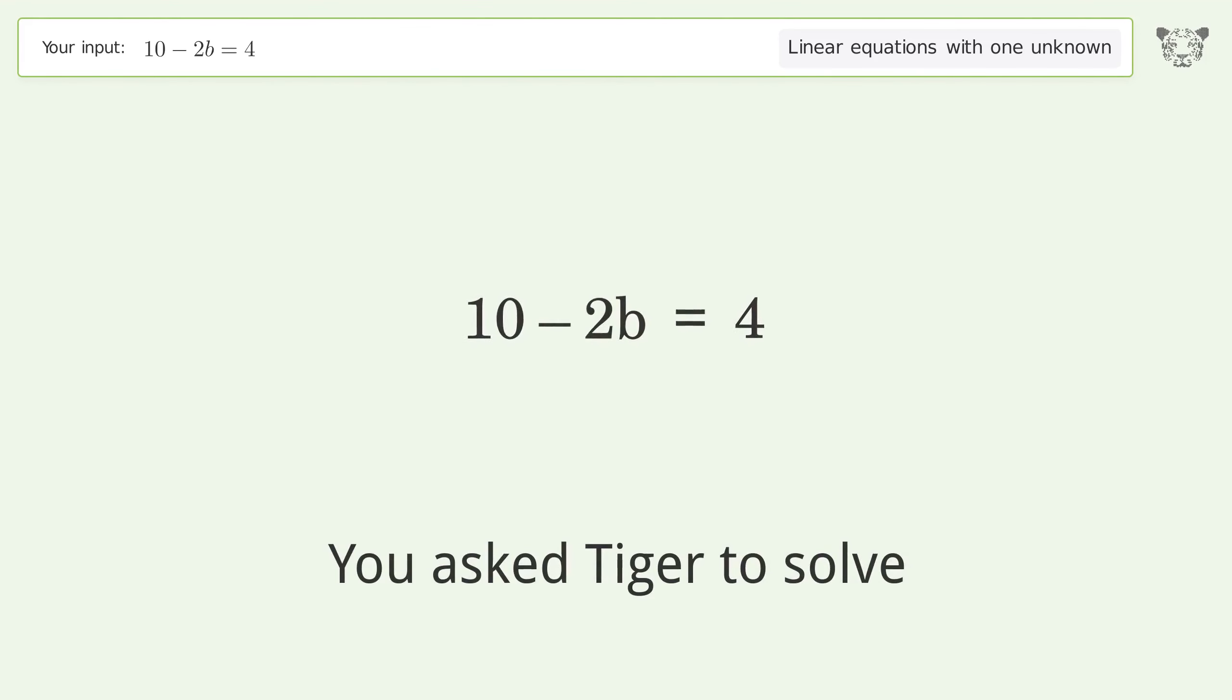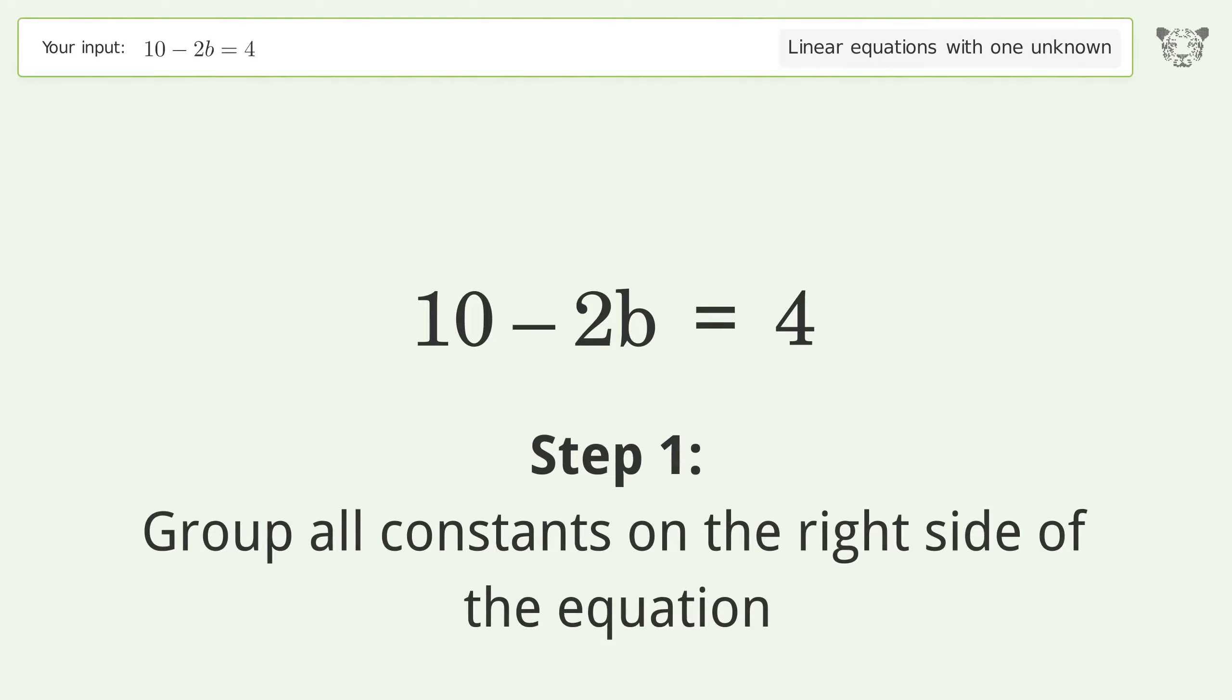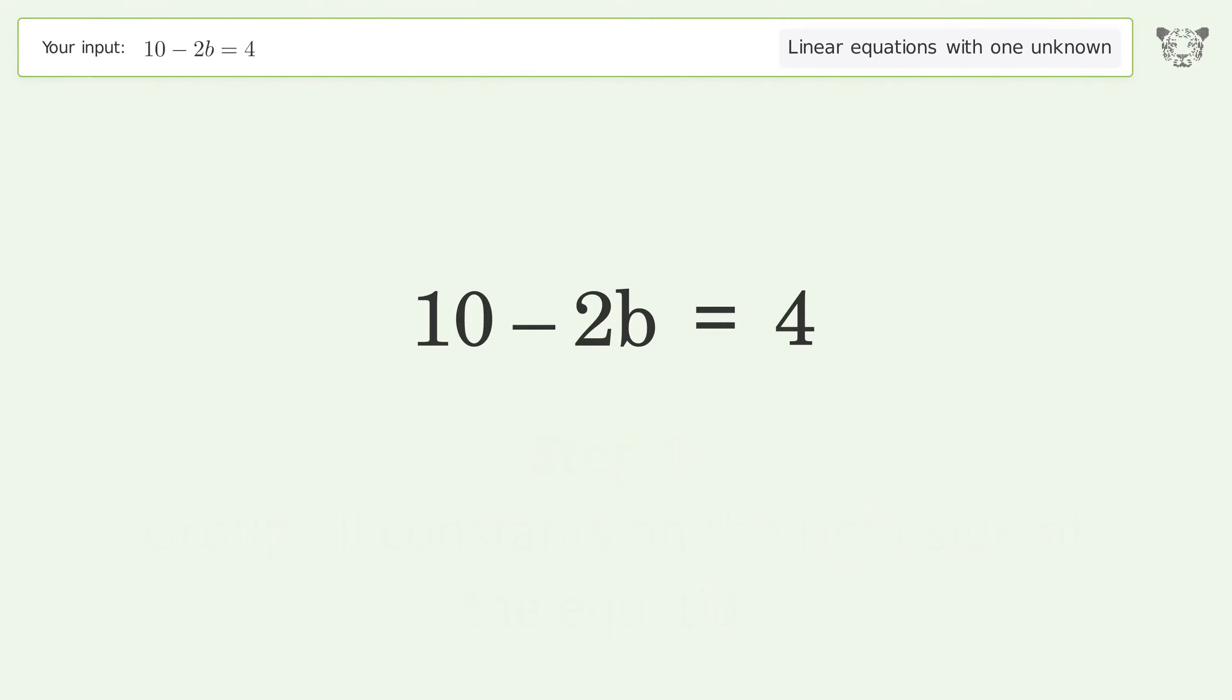You asked Tiger to solve this linear equation with one unknown. The final result is b equals 3. Let's solve it step by step. Group all constants on the right side of the equation. Subtract 10 from both sides.